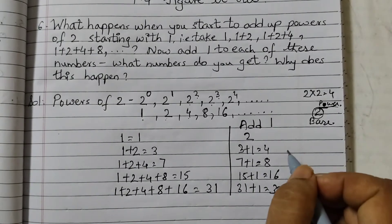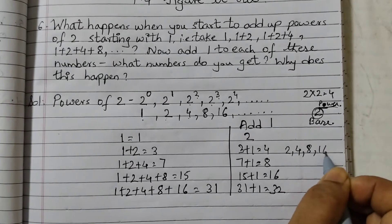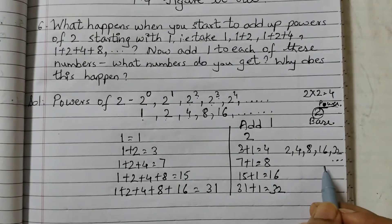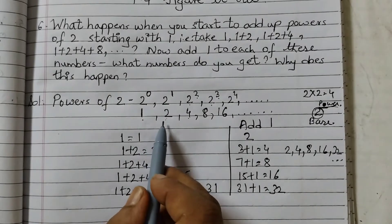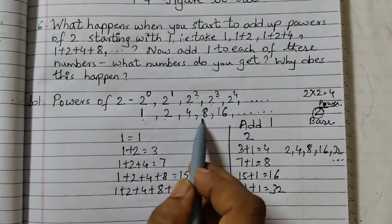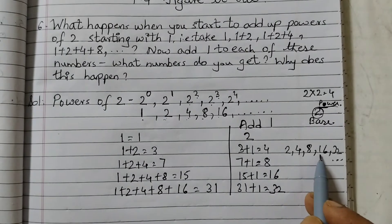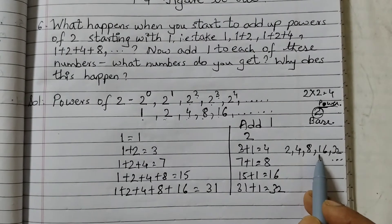So we got 2, 4, 8, 16, 32 and so on. Now what are these numbers? These numbers if you see are again powers of 2. See here 2, 4, 8, 16. 2, 4, 8, 16. So we are getting again powers of 2.